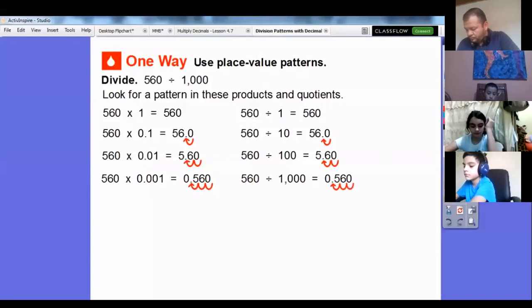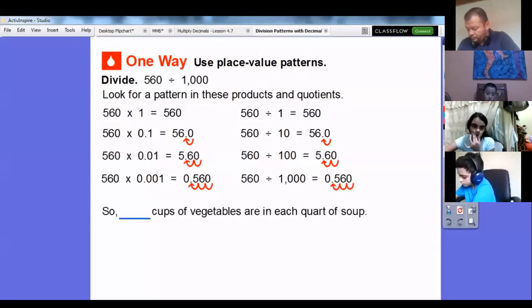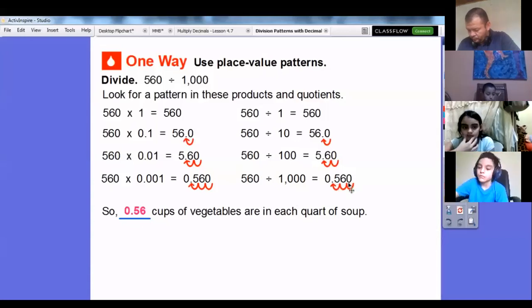What if we divide by 1,000 or multiply by one thousandth? Multiplying by one thousandth just says slide that decimal over three places, so 0.560. We'll get the same when we divide by 1,000, we just move that decimal over three places. Let's answer the question: there are 0.560, which is the same as 0.56 cups of vegetables in each quart of soup.